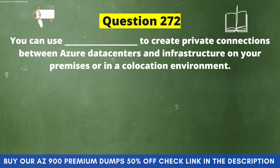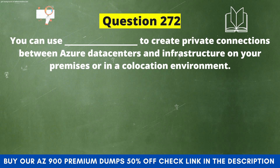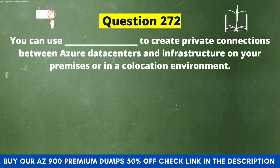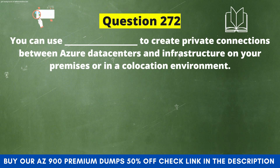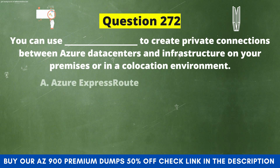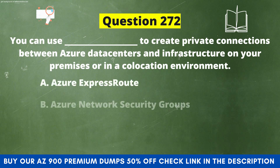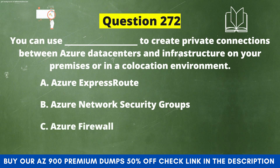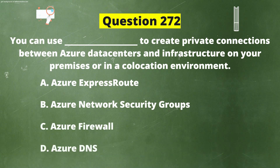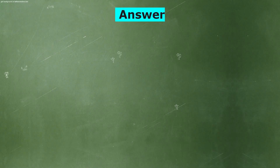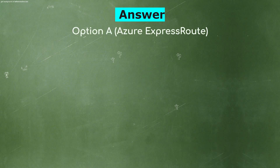Question 272: You can use dash to create private connections between Azure data centers and infrastructure on your premises or in a colocation environment. The options are: A) Azure ExpressRoute, B) Azure Network Security Groups, C) Azure Firewall, D) Azure DNS. The correct answer is option A, Azure ExpressRoute.